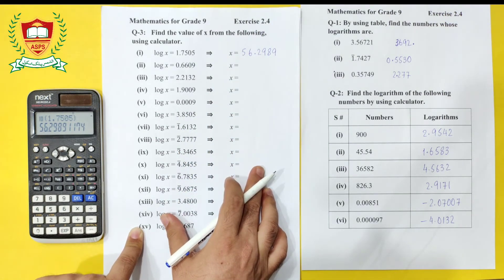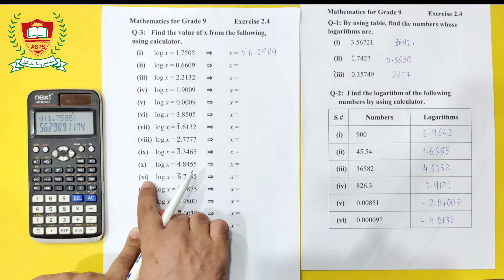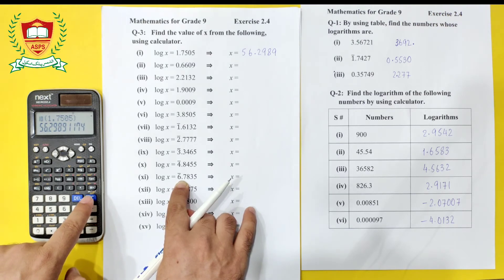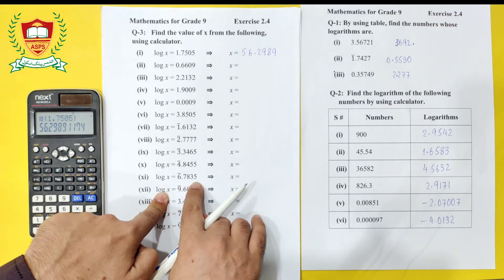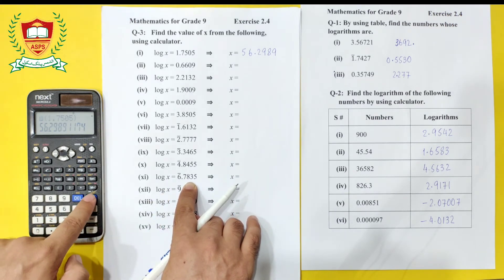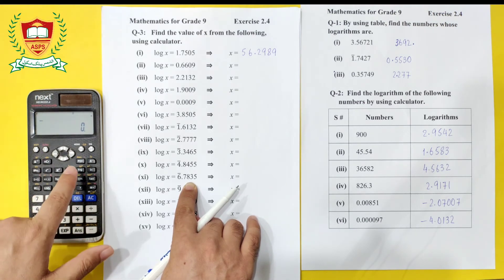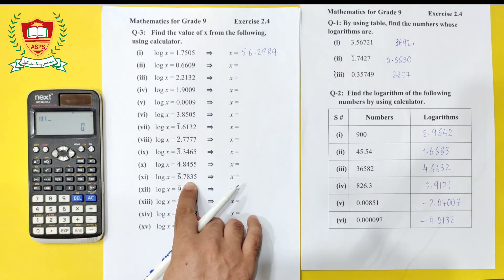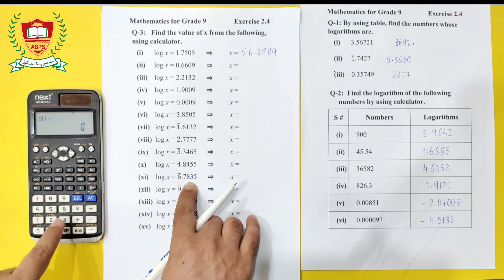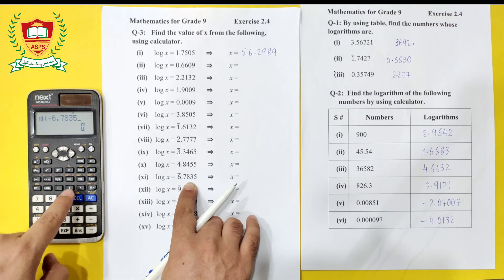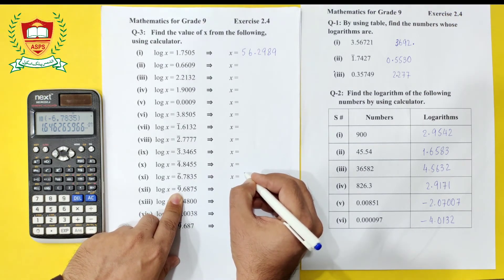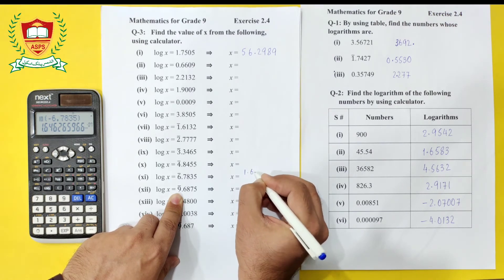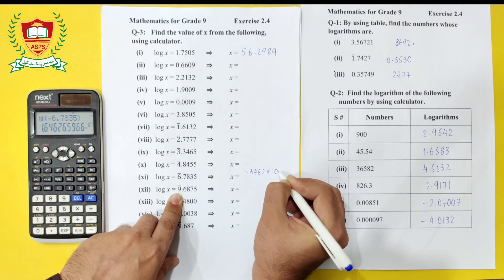Now let us discuss a negative characteristic example — Question 9. Here the characteristic is negative and the mantissa is 0.7835. The characteristic is negative but the mantissa is positive. We press Shift, then log (anti-log), open bracket, press the minus sign, and enter 6.7835, close bracket, and press equals. The calculator gives the answer as 1.6462 × 10 raised to power minus 7.